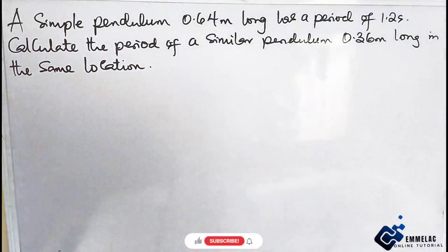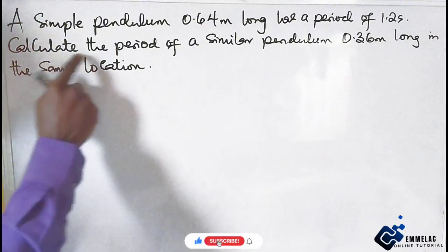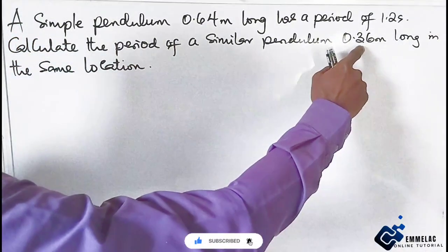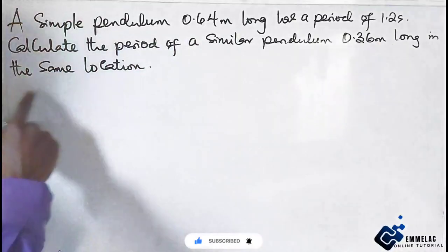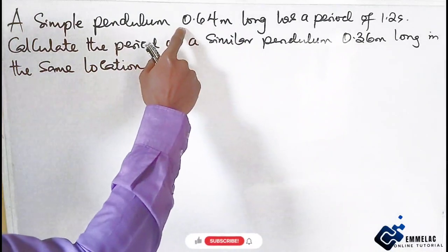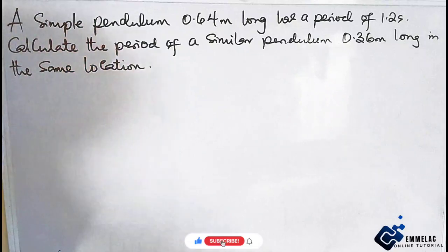Welcome to MEDAC online tutorial. In this question, we are asked to calculate the period of a similar pendulum 0.36 meters long in the same location if a simple pendulum which is 0.64 meters long has a period of 1.2 seconds.